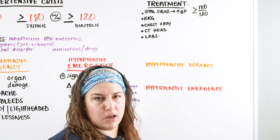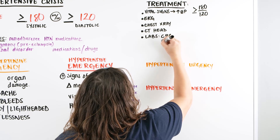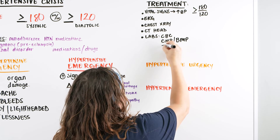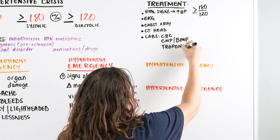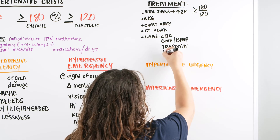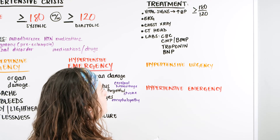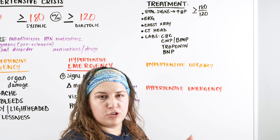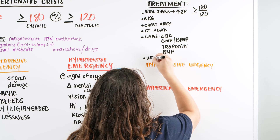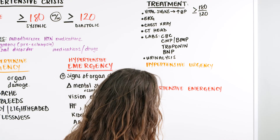We also order labs. High blood pressure can indicate volume issues or dehydration, so we get a CBC and a CMP or BMP. We check troponin as a cardiac enzyme to see if the heart is under stress, and BNP to assess for heart failure. If the patient can urinate, we also do a urinalysis to check kidney function. All these labs help identify what's going on with the patient.